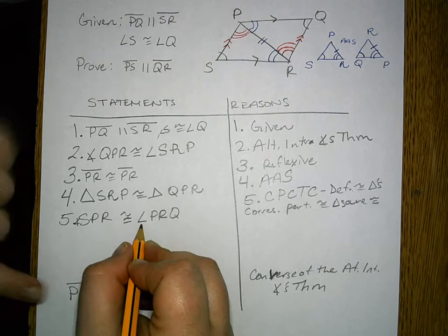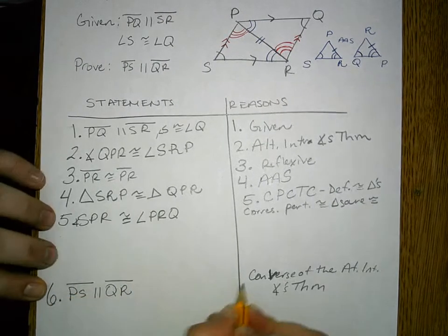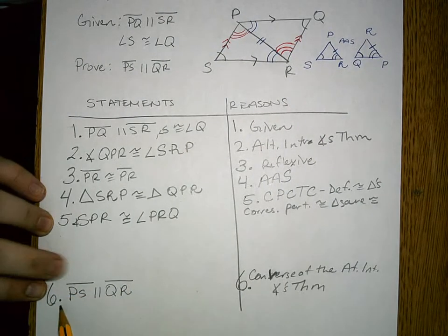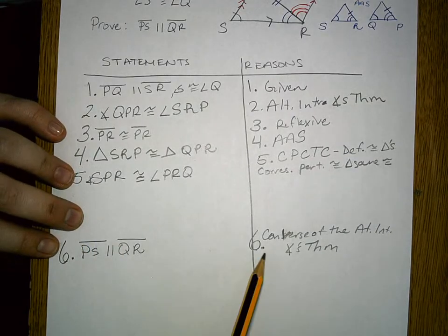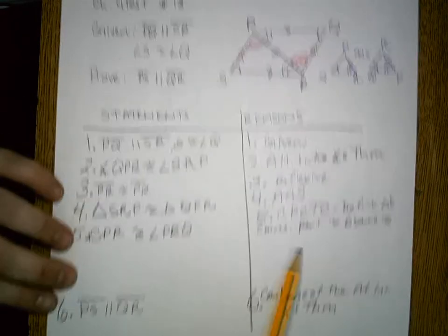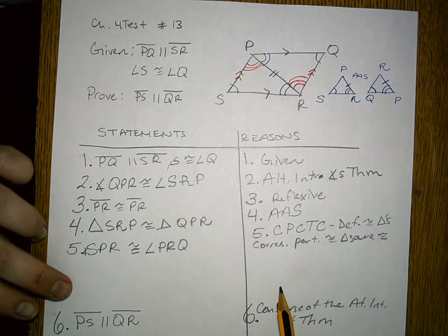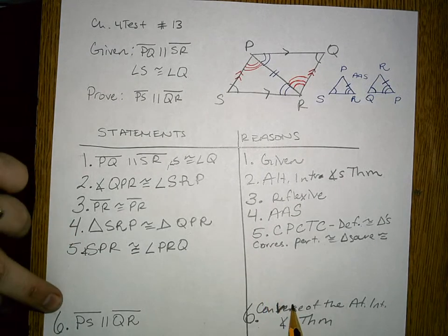And so what we have is our final step, where we've already written down the step, what we have to prove, and the reason. It's okay if there's a little bit of space here because you don't know exactly how much information needs to be pulled in here.